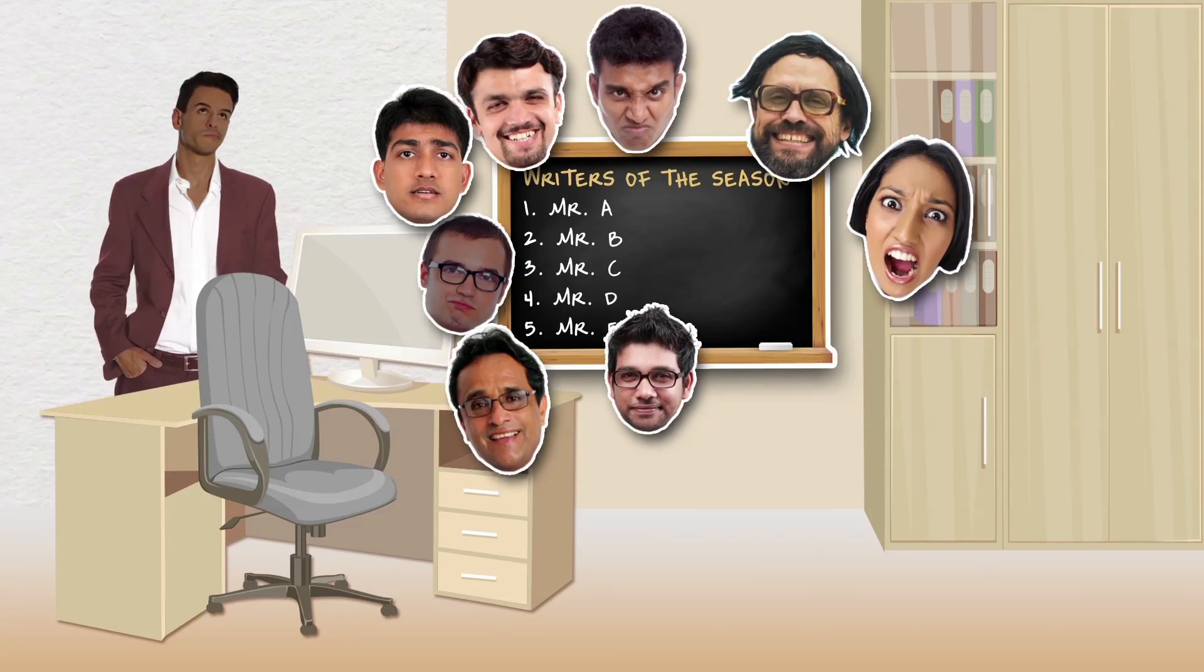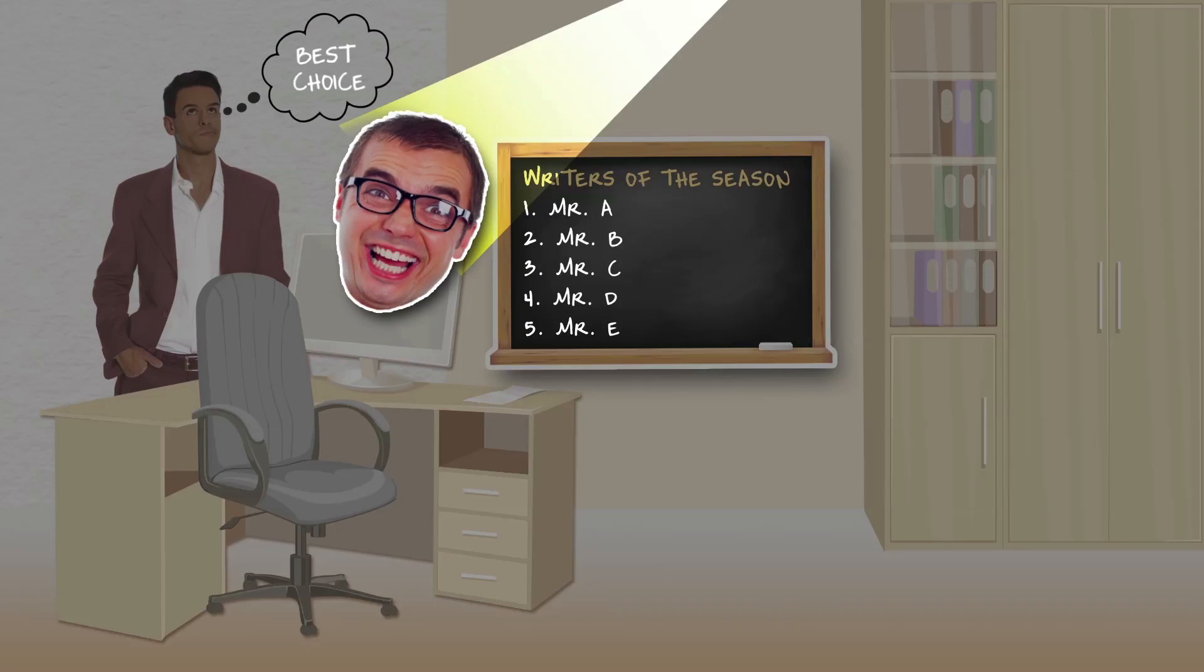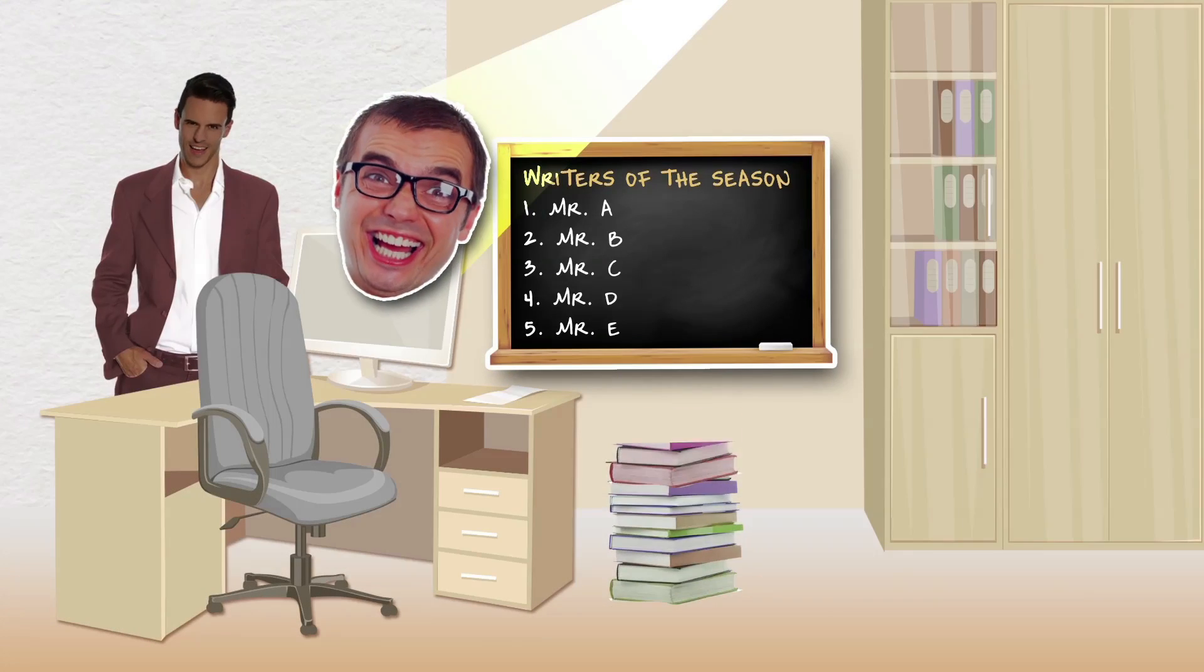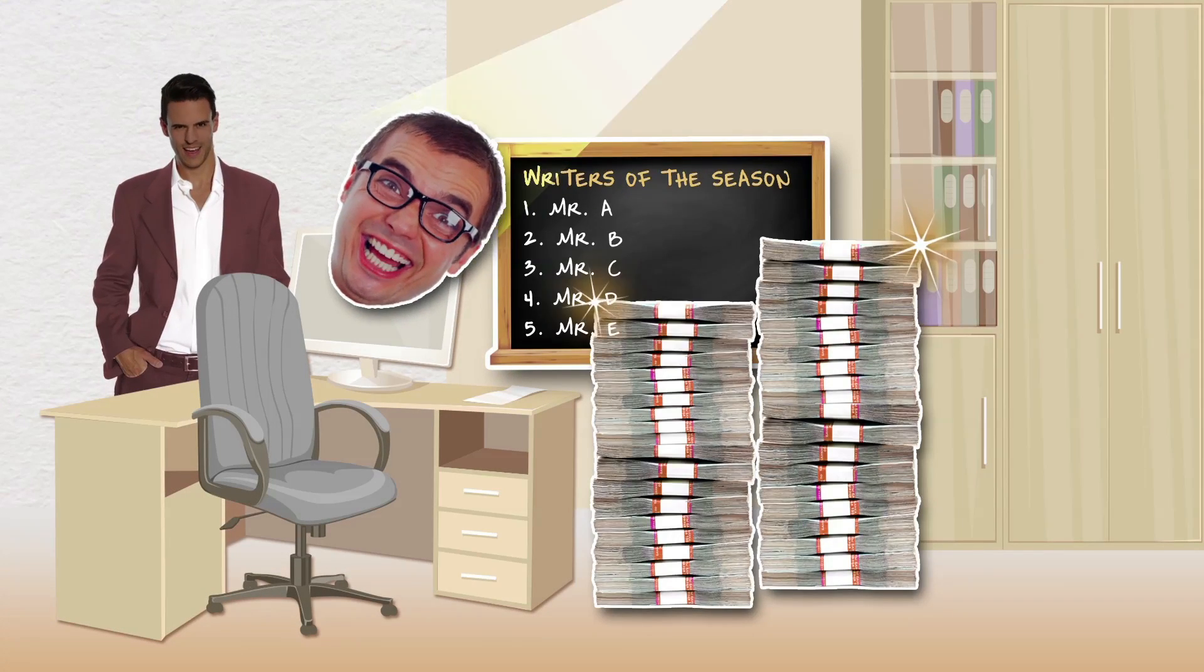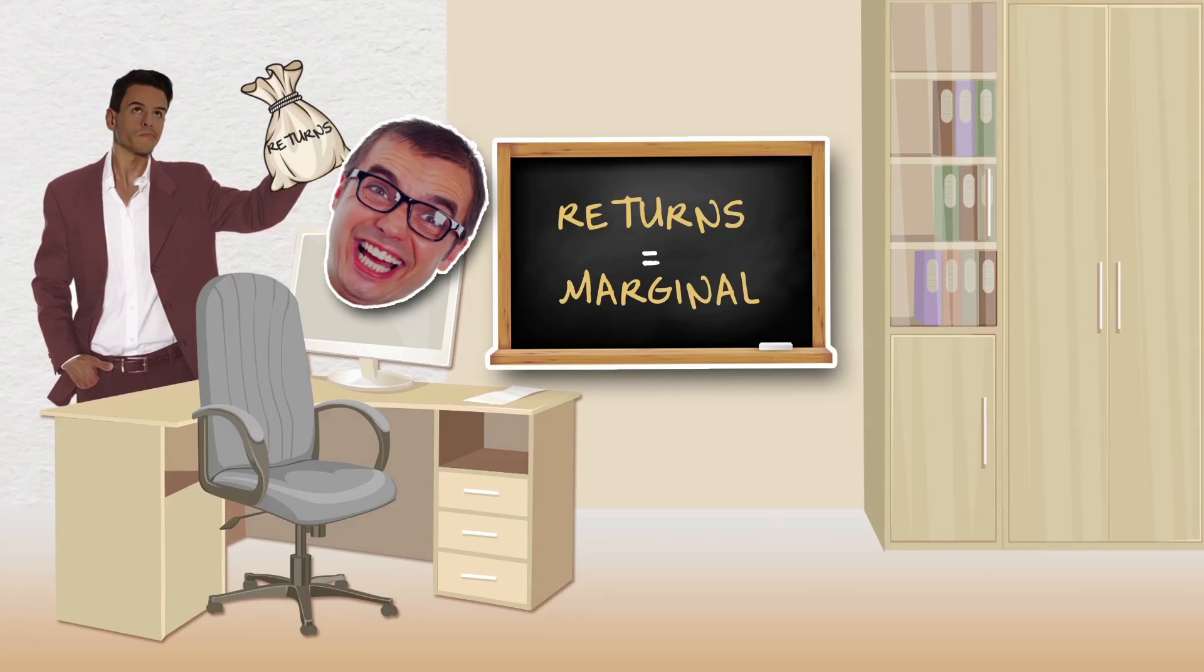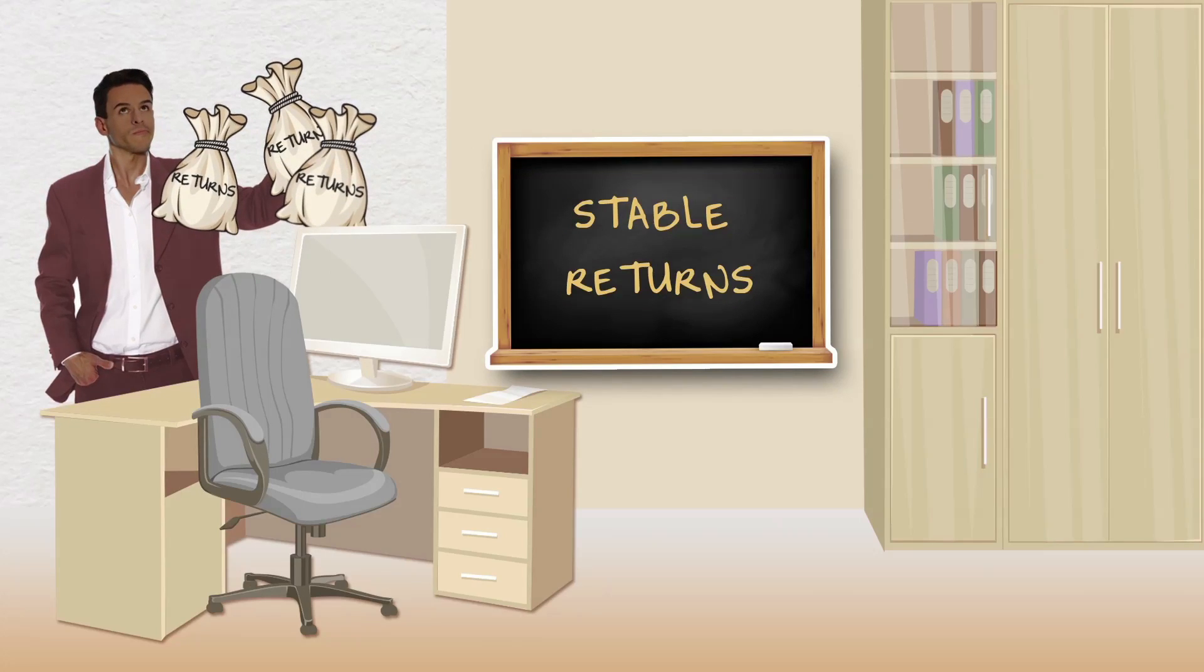Now, the obvious choice for a sure return would be to go for a successful writer who has had a series of books already published. You'll sell a million copies just by his name. And even though you'll have to pay this famous writer a lot of money, making your returns marginal in comparison to your investment, the investments are likely to give you stable returns.